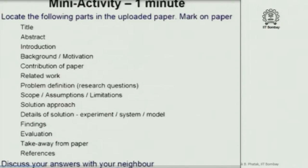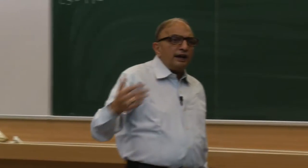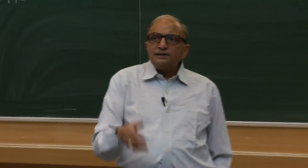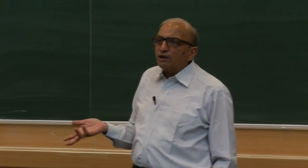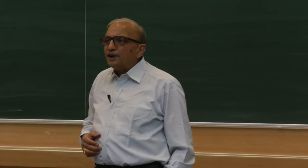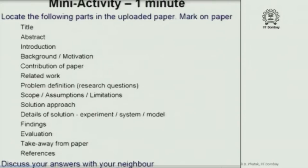Now exchange the paper with your neighbours, and let your neighbours comment on whether you have successfully circled or identified all sections. You do the same thing for your neighbour. This is to ensure that one's weakness is covered by somebody else's strength. Of course, if both of you have forgotten to mark the same point, it will come out in the subsequent group discussion. Right now, just exchange it with your neighbour.